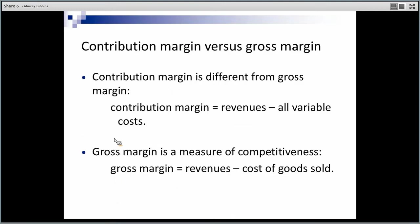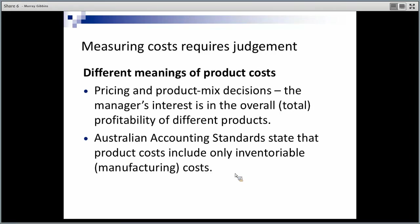This slide reminds us of the difference: contribution margin is revenue less variable costs, whereas gross margin is sales minus cost of goods sold — which has a fixed cost component in it. Australian Accounting Standards specify that product costs include fixed manufacturing overhead, so absorption costing is essentially required for inventory costing.